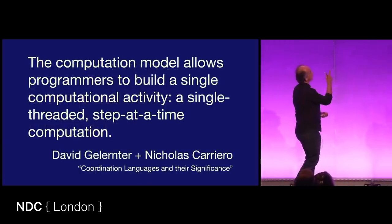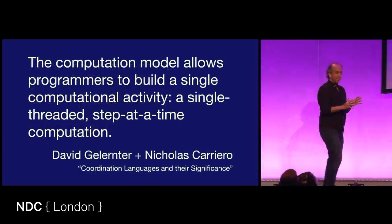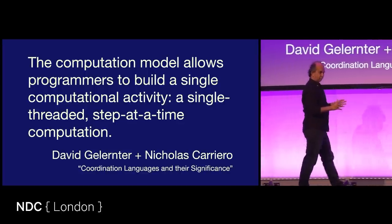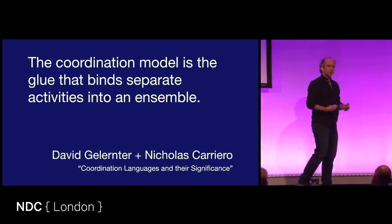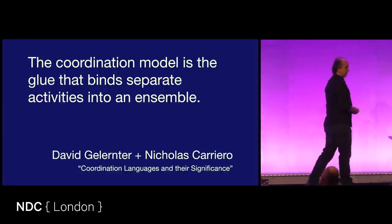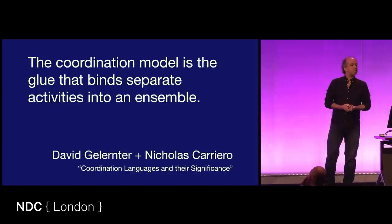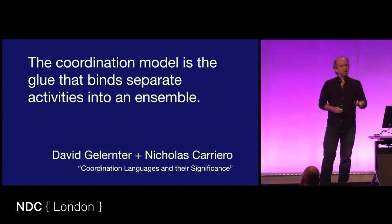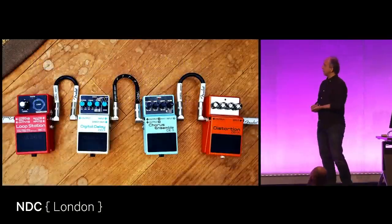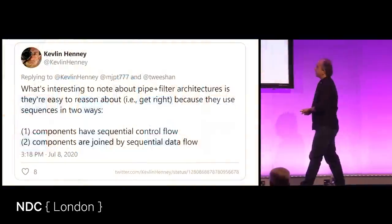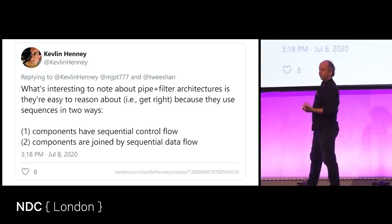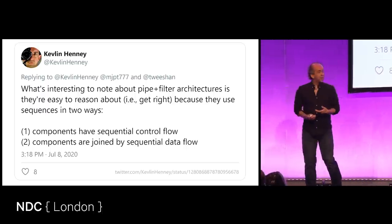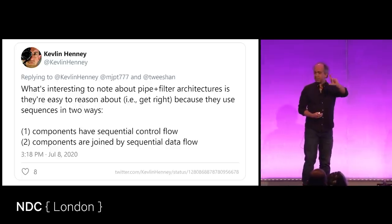The computation model allows programs to build a single computational activity — a single-threaded step-at-a-time computation. They were really clear about this: keep it simple, because people can do that right. Your coordination is: how would you like the result of this to go to this one? Although this is their specific language from the late 80s and early 90s, we've seen the idea before — and very explicitly, the idea of the pipeline.